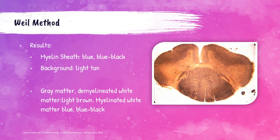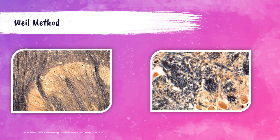When stained with the Weil method, the myelin sheath will be blue to black, the background will be light tan, gray matter and demyelinated white matter will be light brown, and myelinated white matter will be blue to black. Photos show a cross section of spinal cord with distinct gray and white matter, as well as medulla tissue where the myelin sheath is a blue-black color and the background gray matter is light brown. At higher magnification, note the sharp contrast between the blue-black myelin and the light tan background, with decolorized neurons also visible.